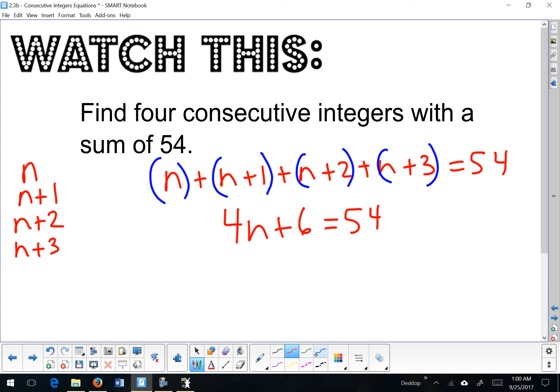Now all I need to do to simplify this is use my properties of equality here. So four n is equal to 48, divide by 4, and then I get n is equal to 12. But I'm not going to box this, because that's not actually my answer. That is one of my integers, but I need to find all four. So I'm going to take this value and I'm going to plug it in here.